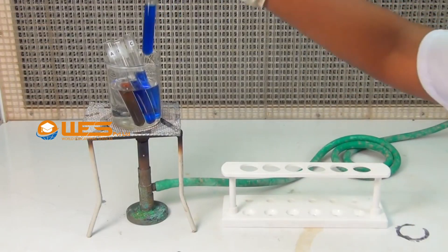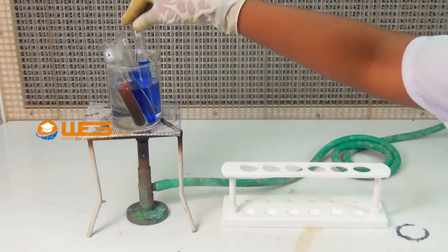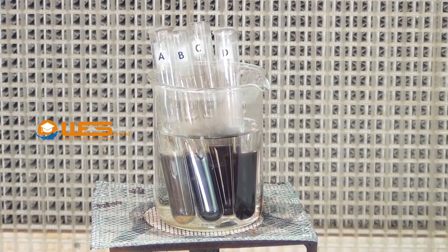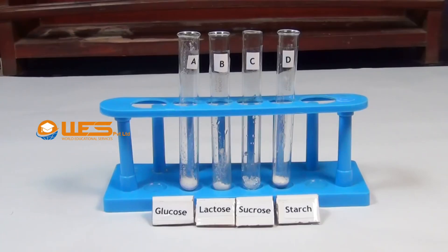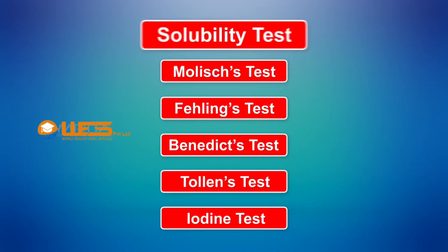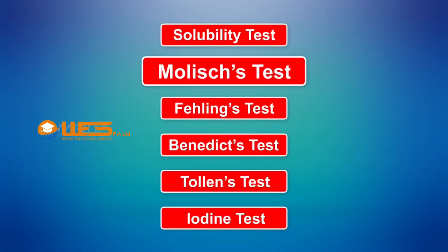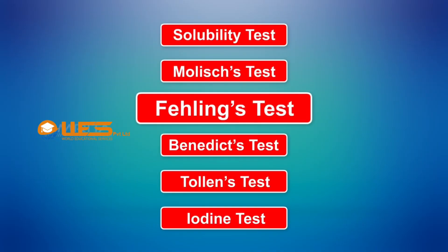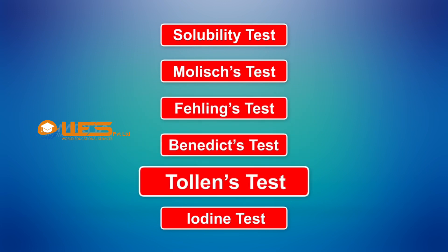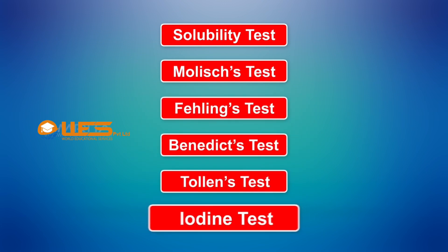Our aim here is to learn how to conduct a few simple tests to analyse the properties and reactions of four common carbohydrates: glucose, lactose, sucrose and starch. The tests are: Solubility Test, Molisch Test, Fehling's Test, Benedict's Test, Tollens Test, and Iodine Test.